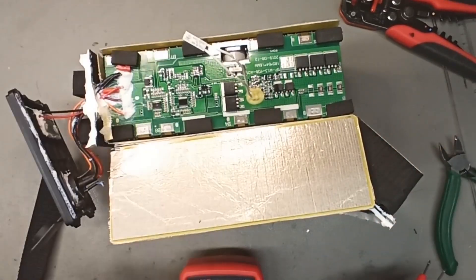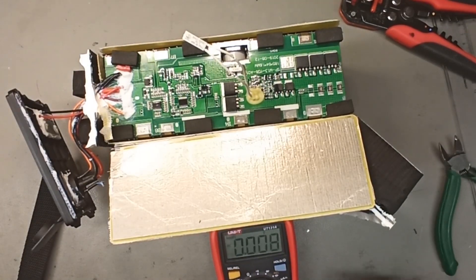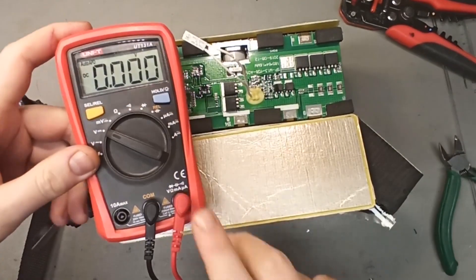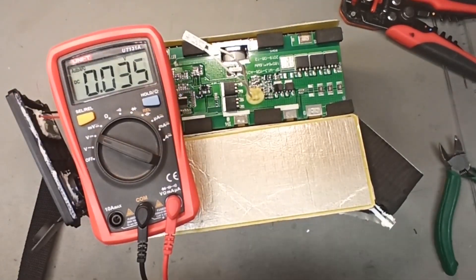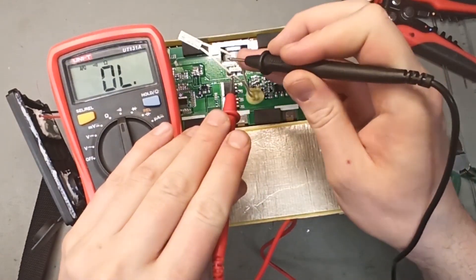These kind of temp sensors have a metal thingy that bends when it gets hot, and you can adjust the thickness of that metal thingy to make it bend at different temperatures. We're going to check if it has continuity.